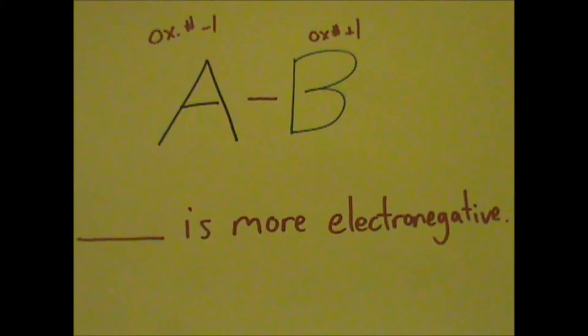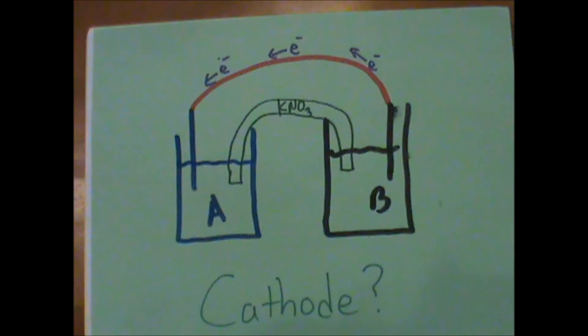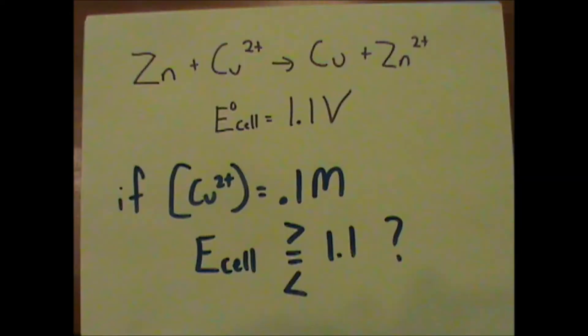A is more electronegative. A is the cathode. The voltage will decrease and be less than 1.1.